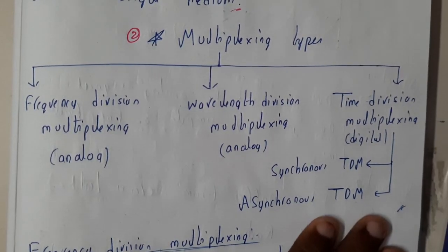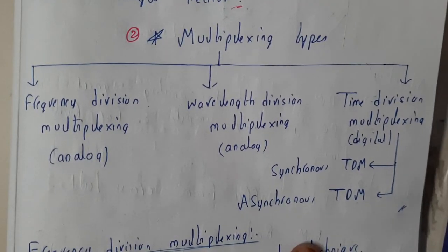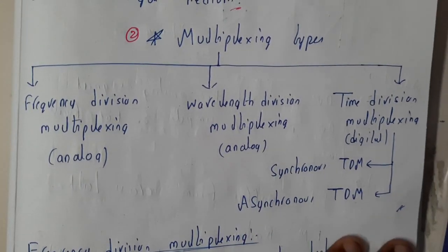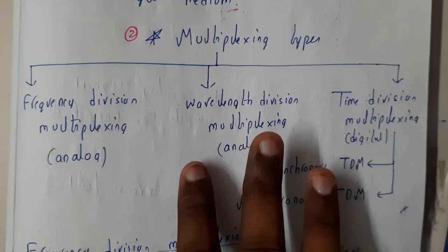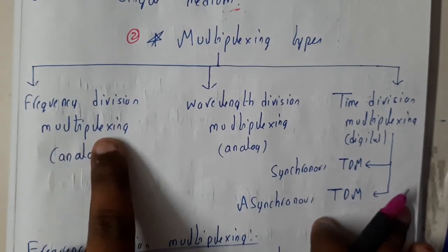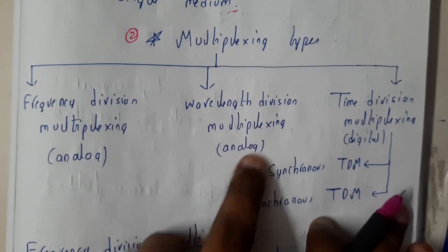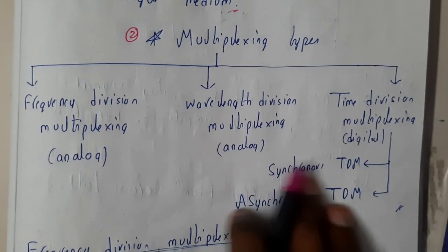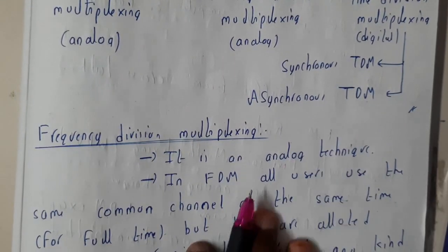Hello guys, we are back with our next tutorial. In this tutorial, let us go through the types of multiplexing and discuss frequency division multiplexing. There are totally three types of multiplexing: frequency division multiplexing, wavelength division multiplexing, and time division multiplexing. Time division multiplexing can be synchronized or asynchronized.